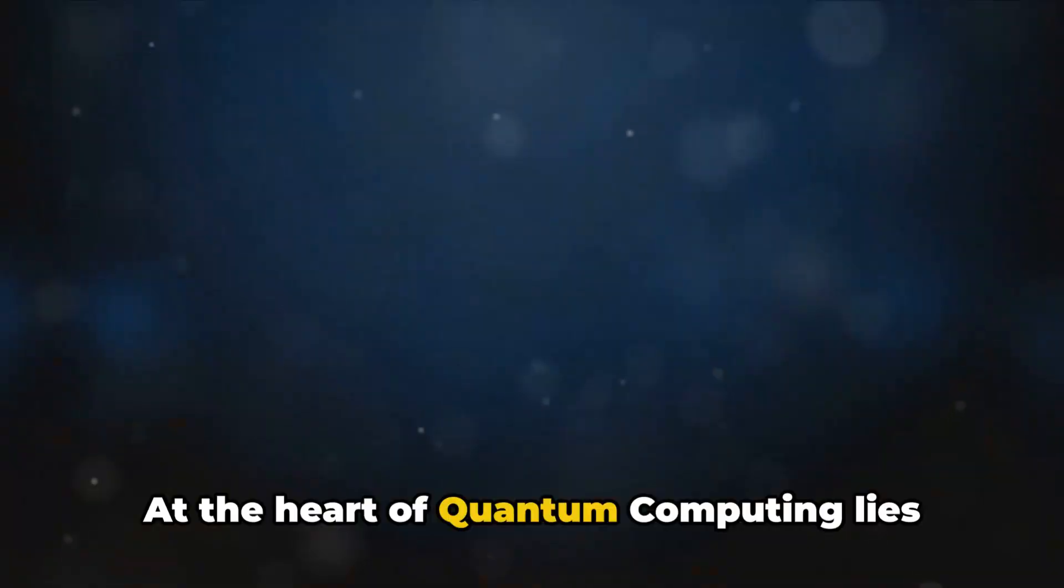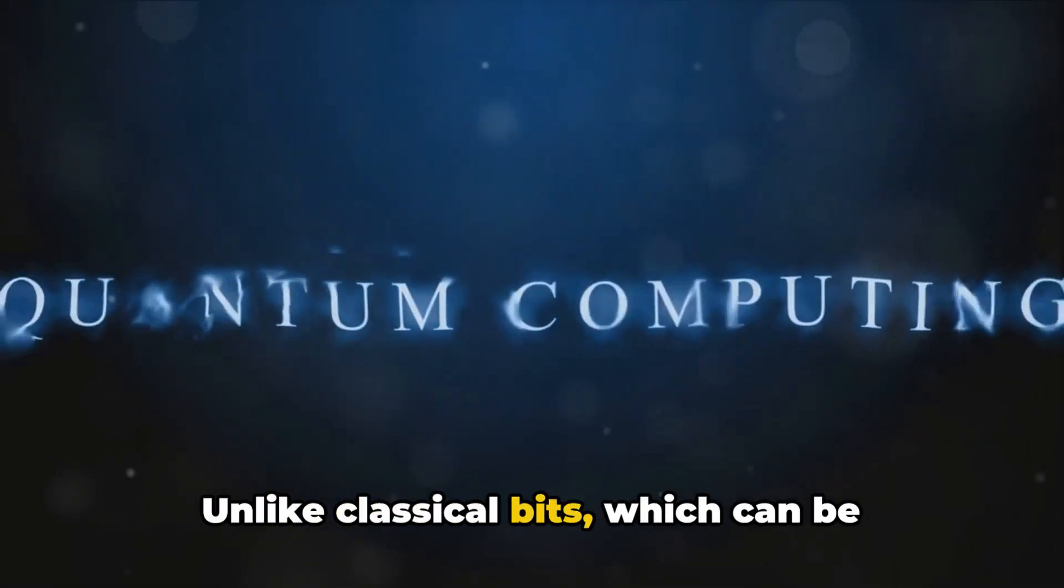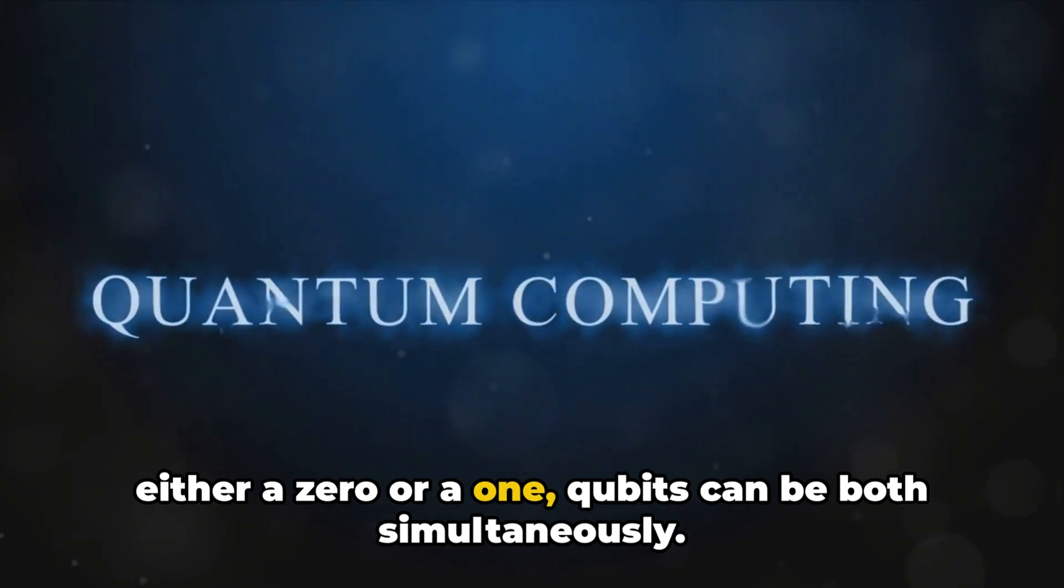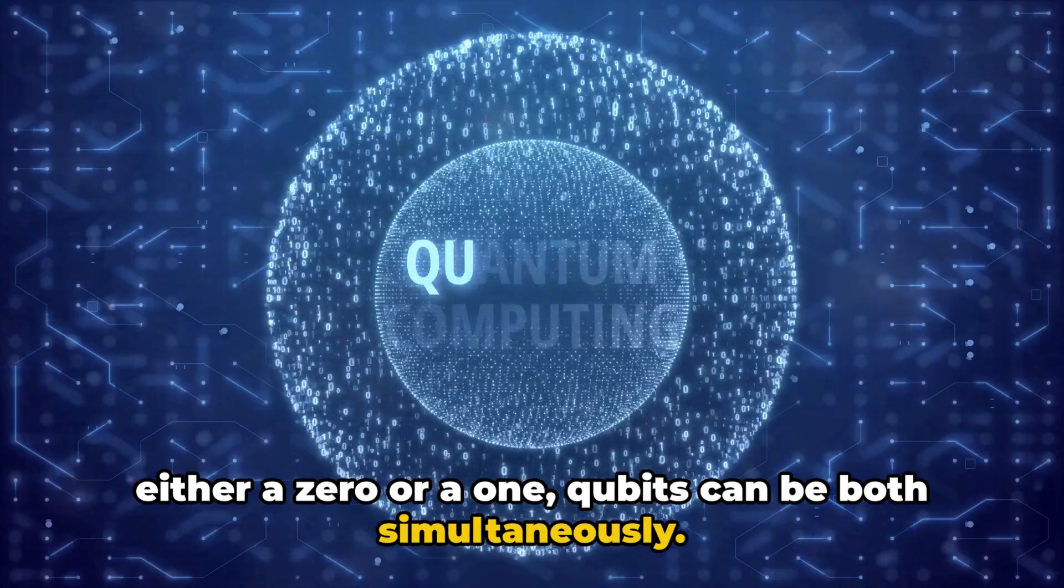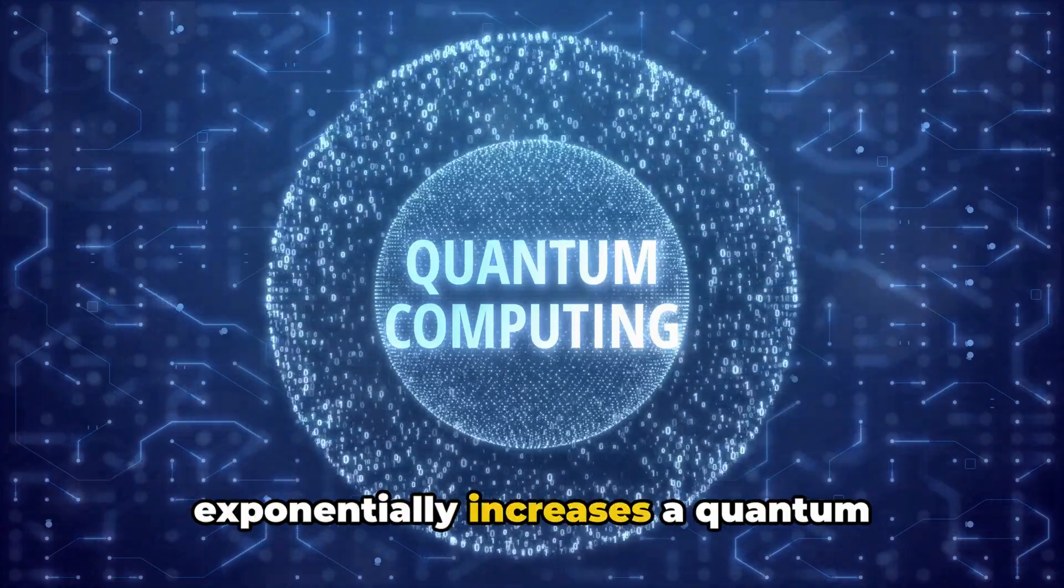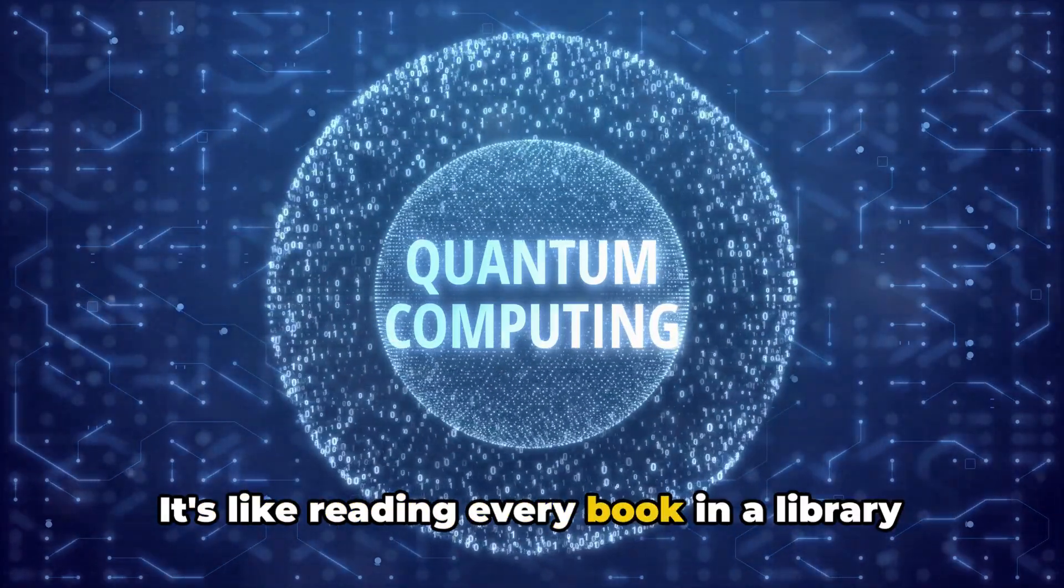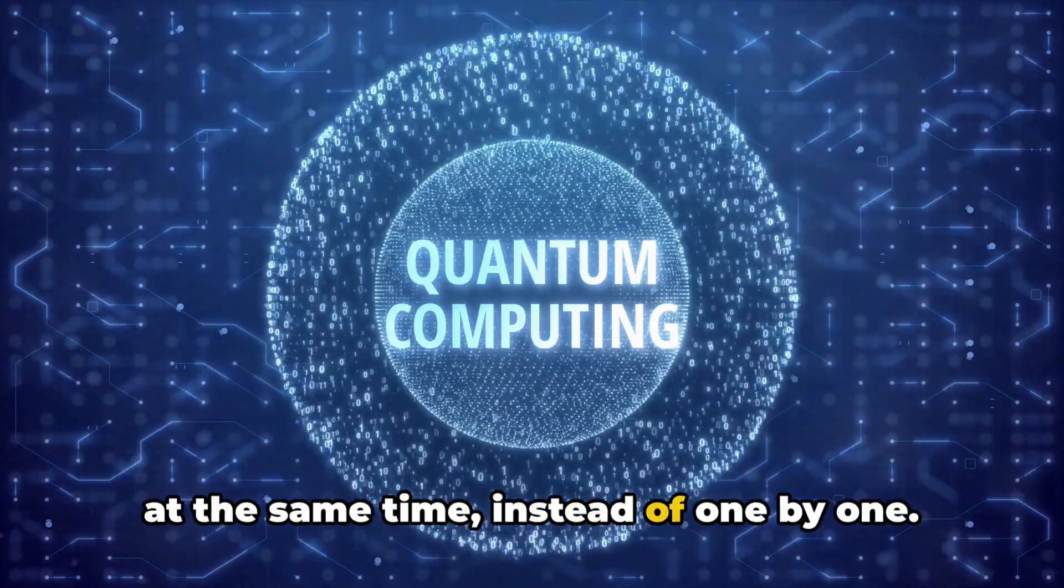At the heart of quantum computing lies the quantum bit, or qubit. Unlike classical bits, which can be either a zero or a one, qubits can be both simultaneously. This phenomenon, known as superposition, exponentially increases a quantum computer's processing power. It's like reading every book in a library at the same time, instead of one by one.